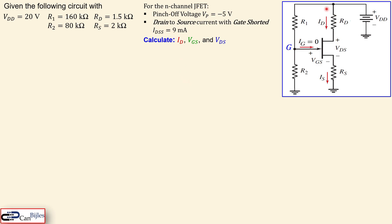What we want to find is: ID, the drain current; VGS, the gate-to-source voltage; and VDS, the drain-to-source voltage. For a JFET — and actually for all FET families — the drain current and source current are exactly equal to each other, because the gate current is essentially zero (nano- or pico-amps). So we can consider ID equal to IS.